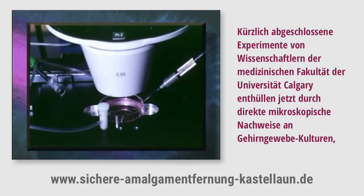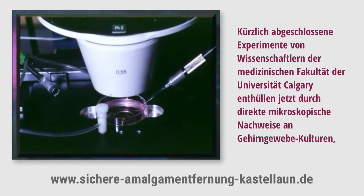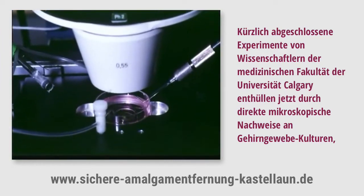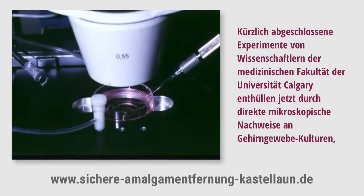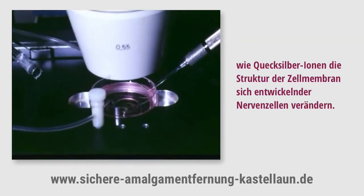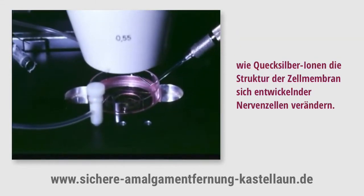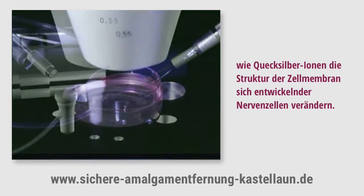Recently completed experiments by scientists at the University of Calgary's Faculty of Medicine now reveal, with direct visual evidence from brain neuron tissue cultures, how mercury ions actually alter the cell membrane structure of developing neurons.